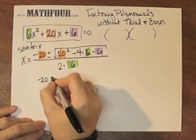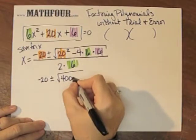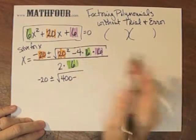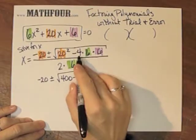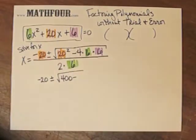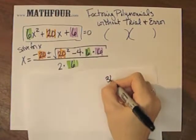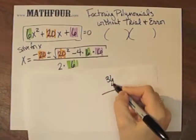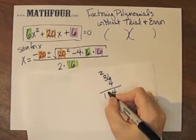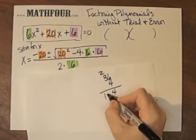So I have negative 20, plus or minus. 20 squared is 400. 4 times 6 times 6 is 36 times 4. Is there any other easier way? That's fine. So I can go to some scratch paper and do 36 times 4. 6 times 4 is 24. 4 times 3 is 12, plus 2 is...